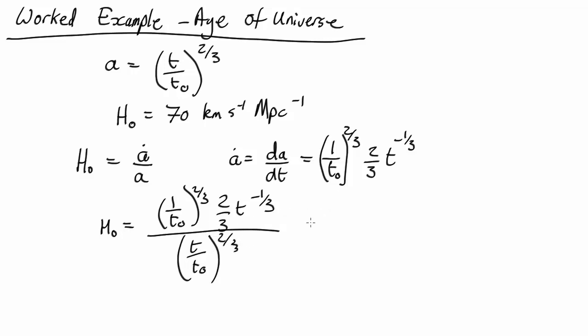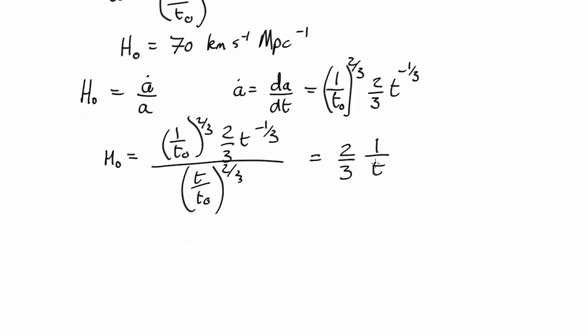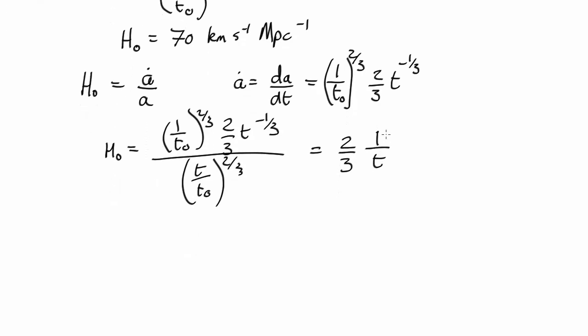So the t₀ to the minus two-thirds cancel, and that comes out as 2 over 3, 1 over t. So we can now work out what t is, the time right now. So we end up with t equals 2 over 3H₀. So that's great, we have a calculation for the age of the universe.